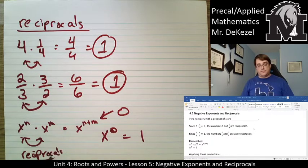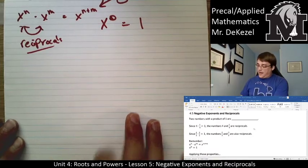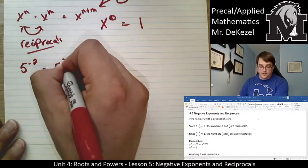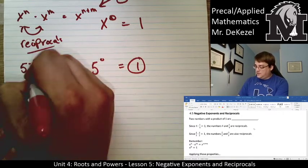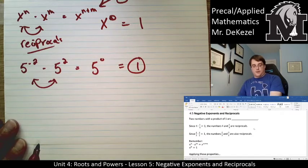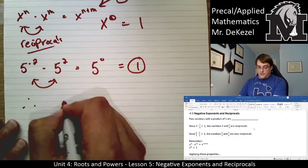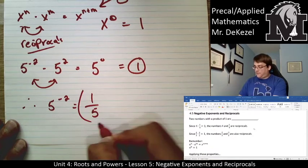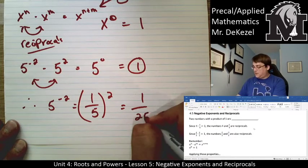What we're looking for when finding a reciprocal of an exponent is the value that adds up to zero — the n and the m — which would be the negative or the positive value depending on what you have. So let's apply that: five to the power of negative two multiplied by five to the power of two equals five to the power of zero, which equals one. So these are reciprocals. Therefore, five to the power of negative two is equal to one fifth squared, or one over 25.